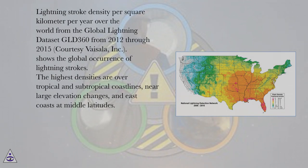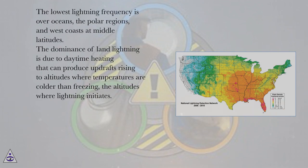The highest densities are over tropical and subtropical coastlines, near large elevation changes, and east coasts at middle latitudes. The lowest lightning frequency is over oceans, the polar regions, and west coasts at middle latitudes.